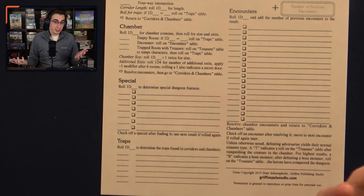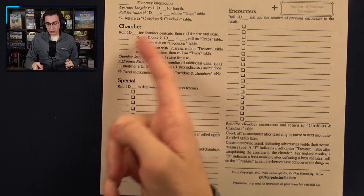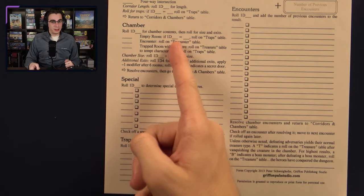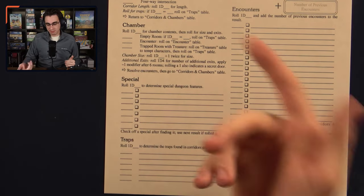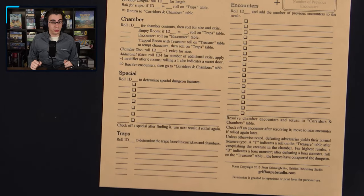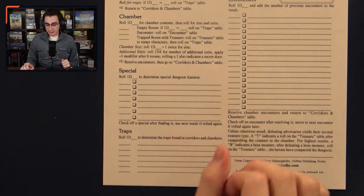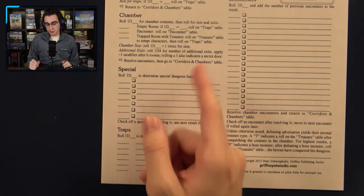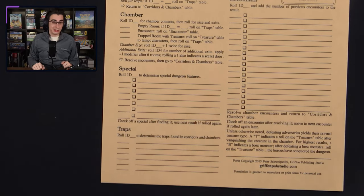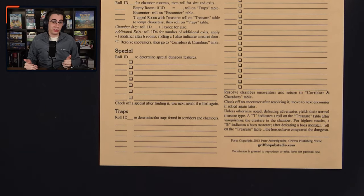Next you have the chamber table, where you can roll a d-something for chamber contents, and then roll for size and exits. You have blanks to fill in for what you want an empty room to happen on, and then there's a separate trap roll where you roll a d-something, and then on a certain number you roll on the traps table. You can fill in whatever you want for how often you want encounters to happen. And then finally you have trapped room with treasure, which is the bottom option. You also have chamber size, so you roll a d-blank plus one twice — once for the length and once for the width. Then you just roll a d4 for the number of additional exits, and it suggests applying a modifier after six rooms. Rolling a one also indicates a secret door. Then you have the special table, where you can put a d-whatever and write all sorts of special dungeon features, which I'll primarily be using for stairways and stuff like that.